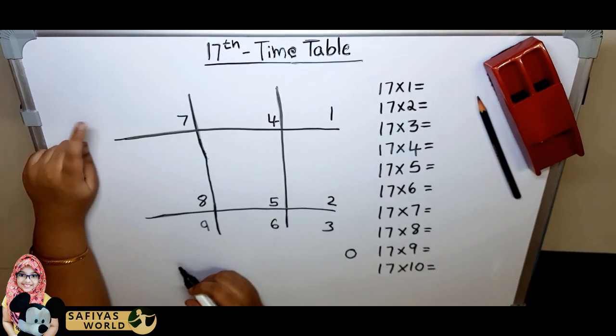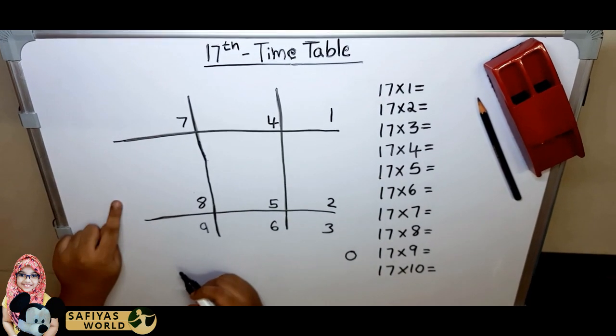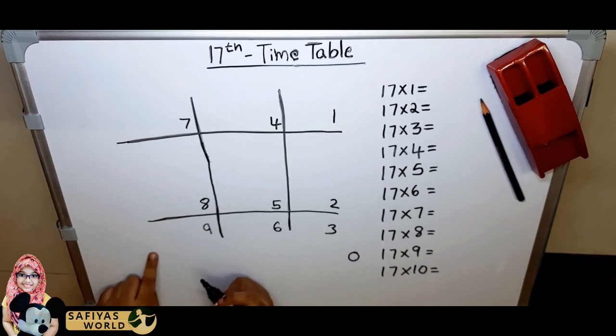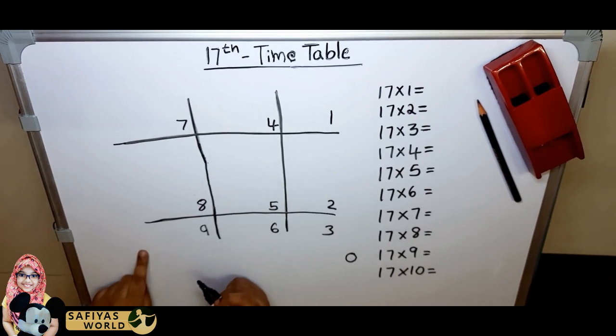Second row we have to write even numbers. Third row once again we have to write odd numbers.